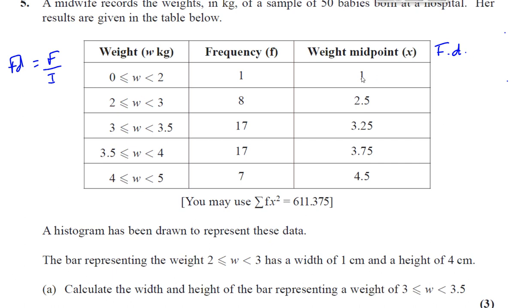All right, so for the first group, for example, the frequency is 1 and the width of the bar is 2. So the frequency density will be 0.5, 1 divided by 2. And for the second group, the frequency density is going to be 8 divided by the width of the bar, which is 1, which is 8.